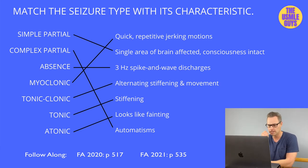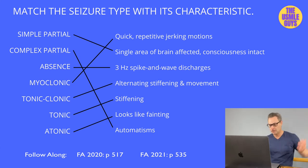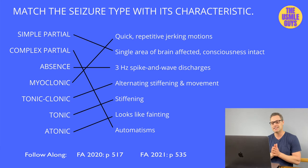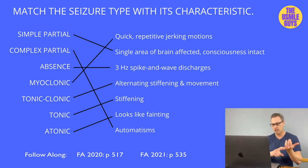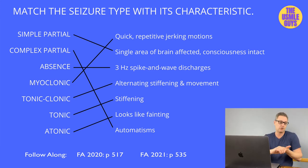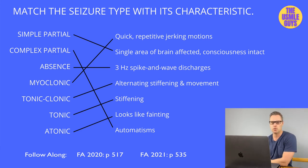The atonic seizure means the patient loses muscle tone and drops to the floor. This can look just like fainting, but the underlying causes are different, so an appropriate workup is needed to determine whether it's a blood pressure problem, dehydration, hypoglycemia, or a neurological seizure event.